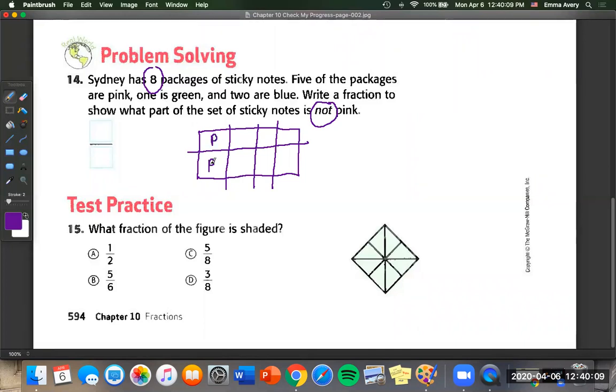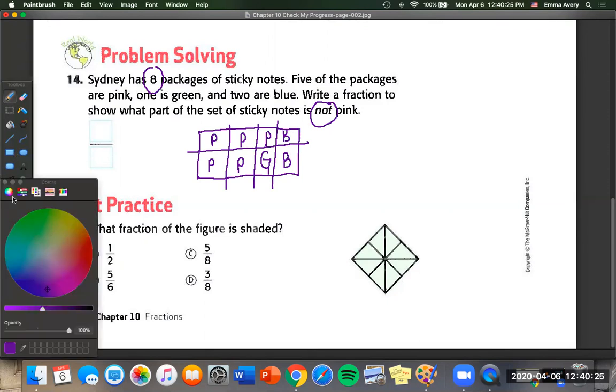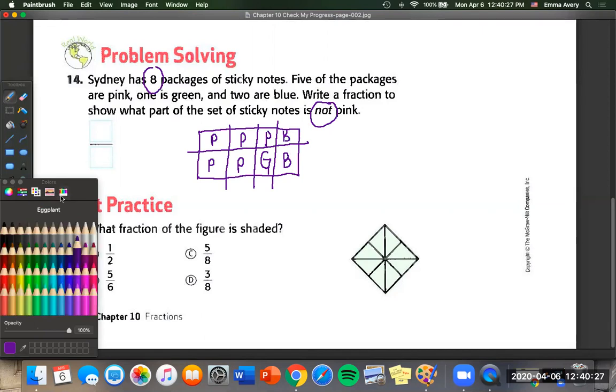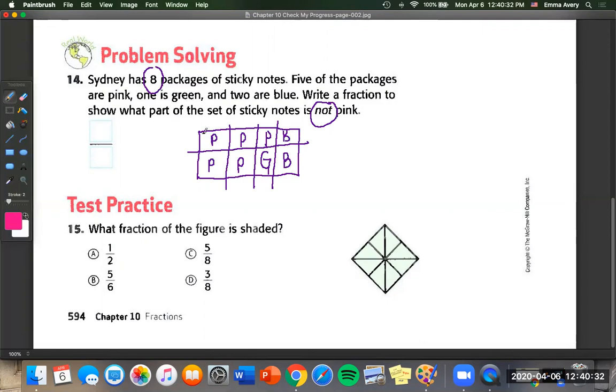We know five are pink. So we can say pink, two, three, four, five. One is green and two are blue. So they want to know what is not pink. So if I switch my color to pink, maybe that will help us show which ones aren't pink. So this is pink, this one's pink, this one's pink here and here. So that leaves us three are not pink. So three over our total number of eight.